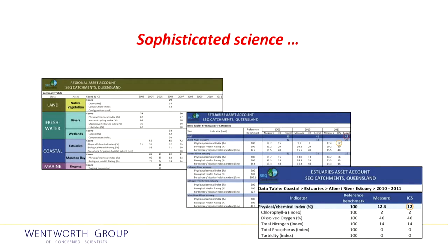Accounting for Nature addresses these challenges by combining the science of reference condition benchmarking with a range of scientifically accredited sampling methods to describe the common unit of measure — what we call an ECOND.